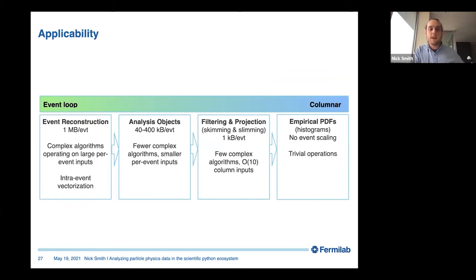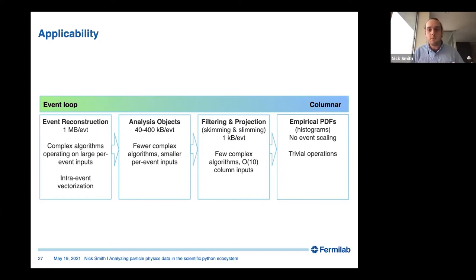Event loops are more appropriate towards the left half of the ETL pipeline because you have more complex algorithms operating on very large per-event input. You can even have intra-event vectorization — we have 70,000 crystals in our detector, and reconstructing the pulse from each one is parallelizable without needing to vectorize across events. Eventually you start filtering and projecting, making composite variables. Finally you're operating on histograms, which are just NumPy arrays at that point, so it's almost obvious that you want to do something columnar there.